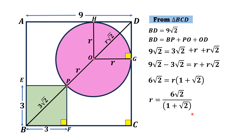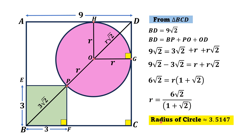To simplify, we can rationalize the denominator. Using a calculator, the radius of the circle is approximately 3.5147 units, and that is the answer.